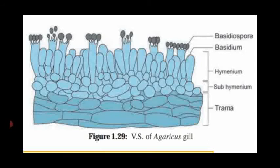Out of these four spores, two are plus strain and two are minus strain. The base of the gill region contains a layer named trama — the central part of the gill between the two hymenial layers is known as trama. This is all the structure seen in the vertical section of an Agaricus gill.